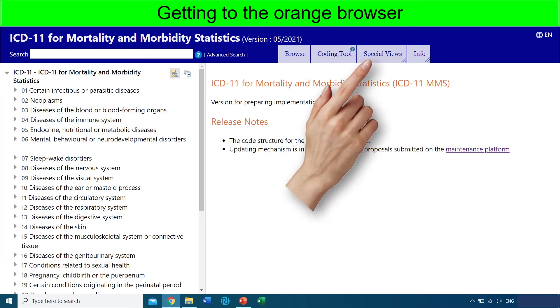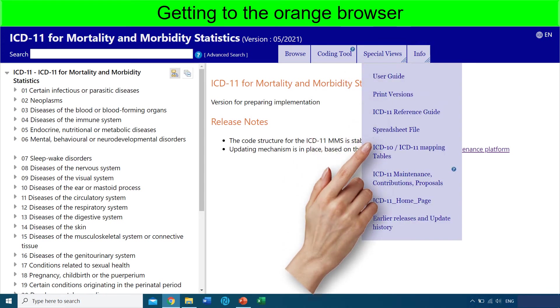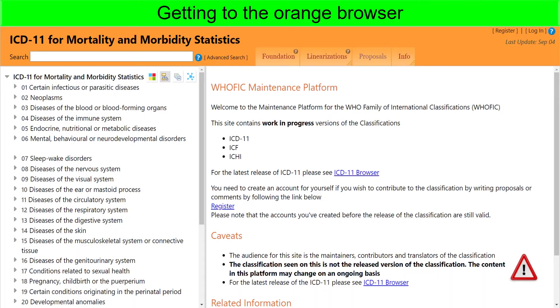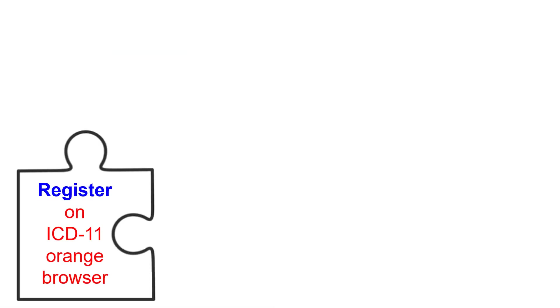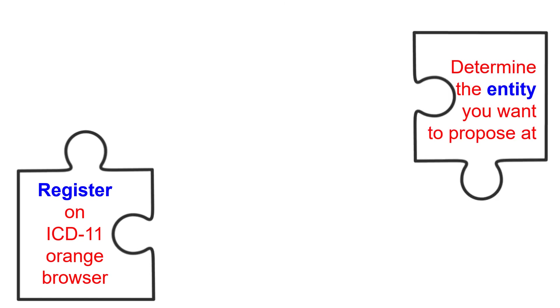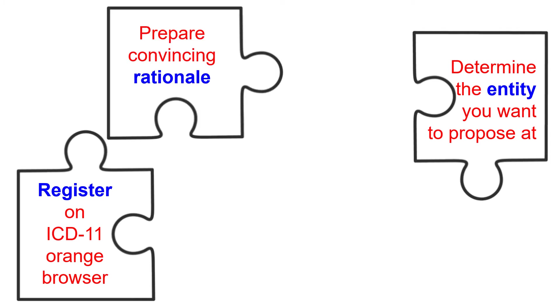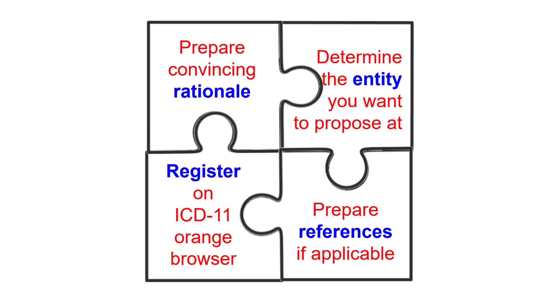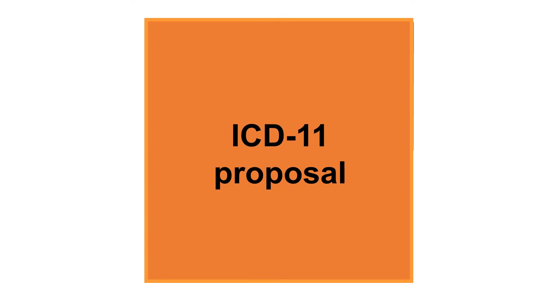So how do I get to the orange browser? From the blue browser, click Special Views. From the list, click 'ICD-11 Maintenance Contributions Proposals'. This opens up the orange browser. To prepare a proposal, you need four things: first, register on the ICD-11 orange browser; determine the entity you want to propose a change to; prepare a convincing rationale; and prepare references if applicable. These four items together will make sure that you have a proper ICD-11 proposal.